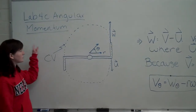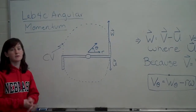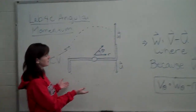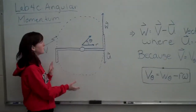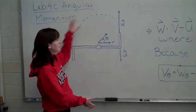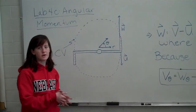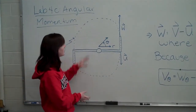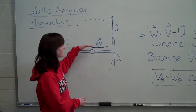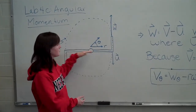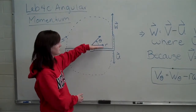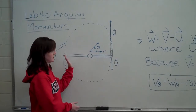In Lab 4C, we'll take a look at the principle of angular momentum by looking at a rotating sprinkler head. In this problem, your control volume is the full circle that encompasses both nozzles of the sprinkler head. Your coordinate system will be a radial one, with the radial direction pointing out along the arm and the theta direction being the angle along which it's rotating.